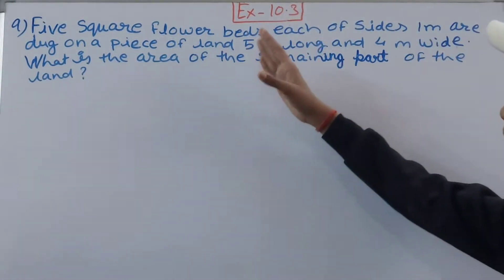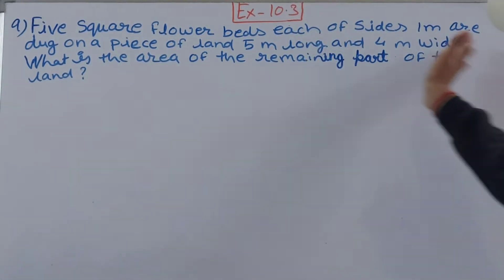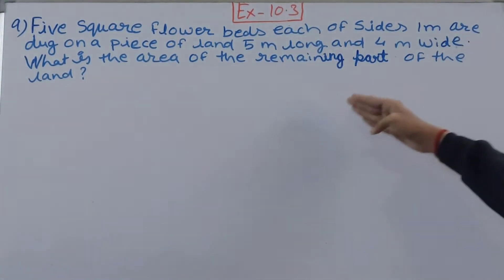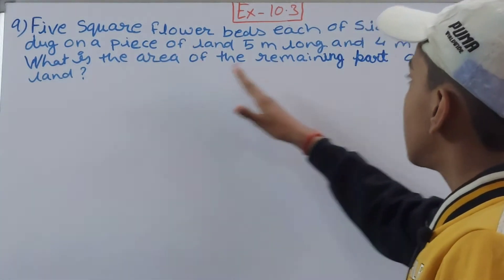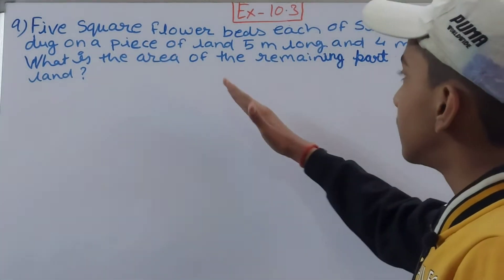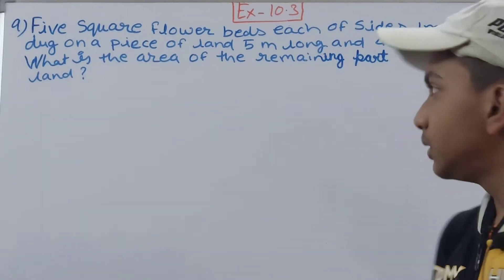Five square flower beds, each of side 1 meter, are dug on a piece of land 5 meters long and 4 meters wide. What is the area of the remaining part of the land?